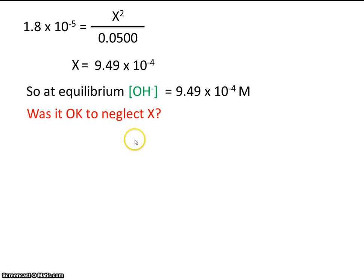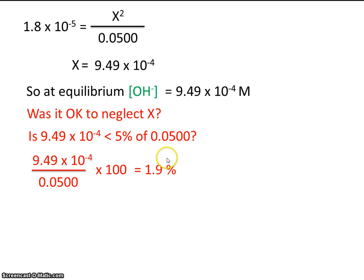Was it okay to neglect x? Well, let's see. This was our initial concentration, remember. And is our x value less than 5% of this initial concentration? Yes, it turns out it is. It's 1.9. So it was okay to neglect x.